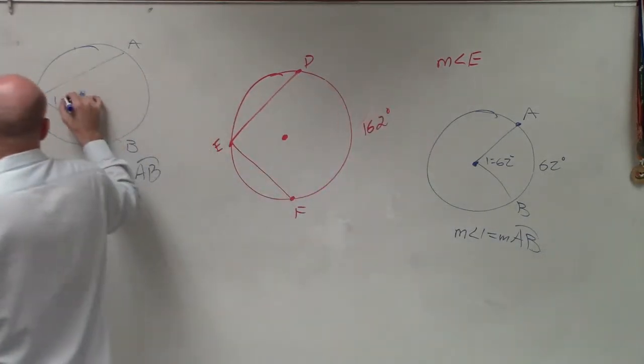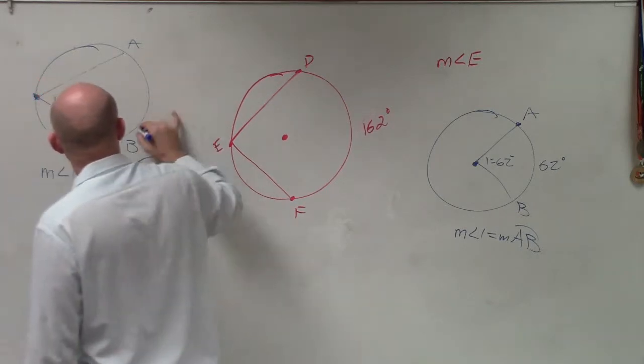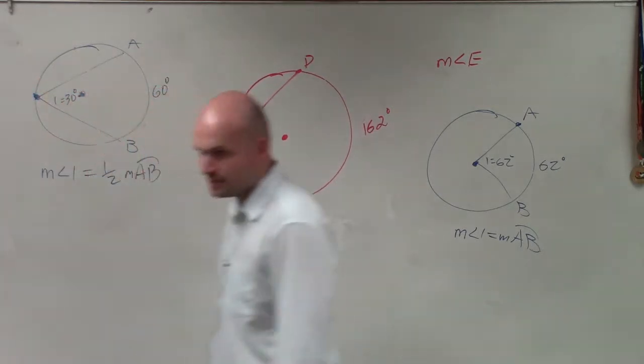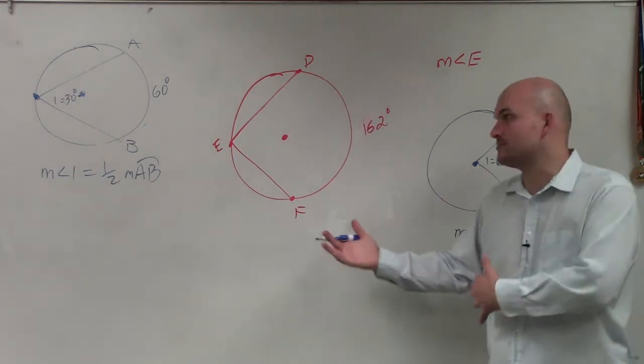So if I said this angle was equal to 30 degrees, then my arc measurement would be 60 degrees. That's what we learned in the last class period.